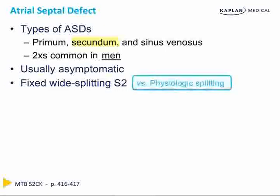A fixed wide split S2 is different from physiologic splitting. Normally on expiration, S2 is not split — the aortic and pulmonic valves close simultaneously. On inspiration, increased venous return to the right heart delays pulmonic valve closure, and decreased return to the left heart causes earlier aortic closure, producing A2-P2 splitting on inspiration only. That is physiologic splitting. In ASD, you have a fixed wide split S2 throughout both inspiration and expiration — heard all the time. This is essentially the pathognomonic sign for ASD, particularly on your exam.